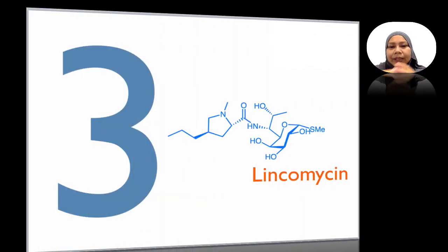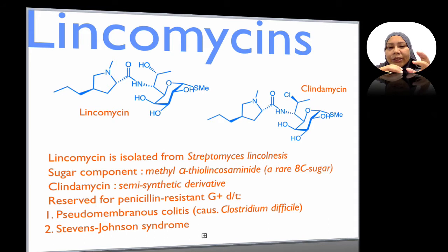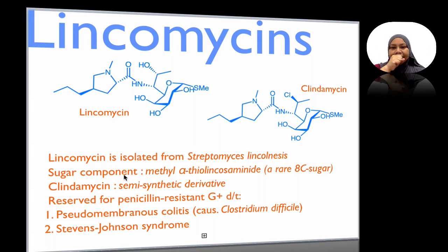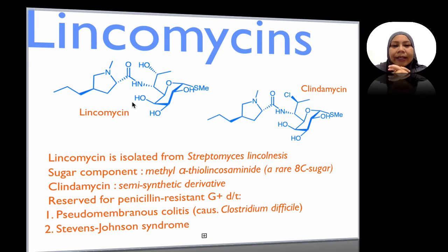Now let's come back to the third protein synthesis inhibitor, which is lincomycin. Lincomycin is a combination of an aglycone and also a sugar molecule — actually a strange molecule. It's isolated from Streptomyces lincolnensis. The sugar component has a thiomethyl group; it's a methyl alpha-thio-lincosamide. Lincosamide is the sugar here. It's a rare 8-carbon sugar, only available through this bacteria.